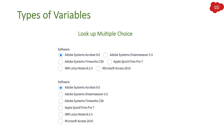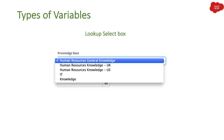Then we have Lookup Select Box. On native forms like Incident, Change, or Problem, we have a choice field showing different options. Similarly, Lookup Select Box lets you refer to a table, fetch its records, and display them in a select box format. Unlike a plain choice field, this is a lookup — it fetches records from a referenced table and lets users select from them.